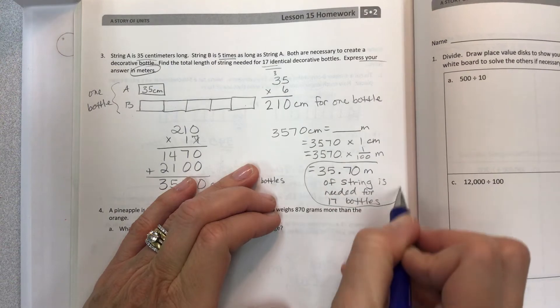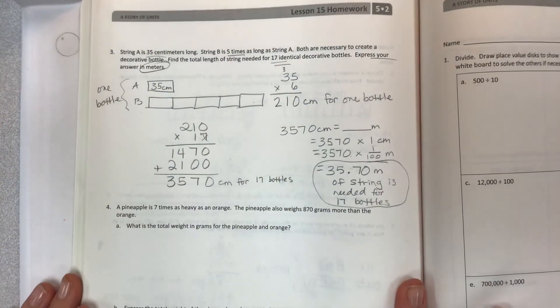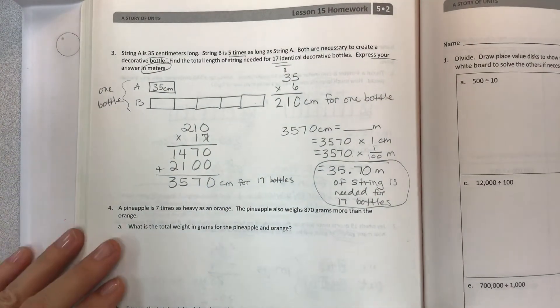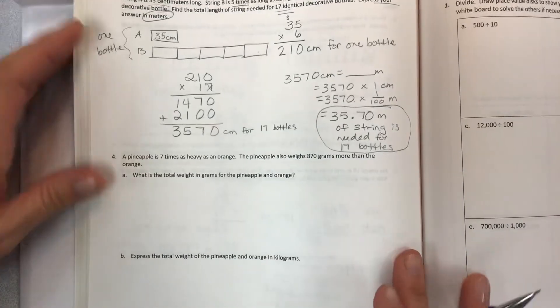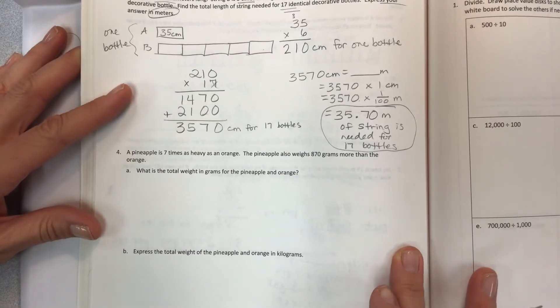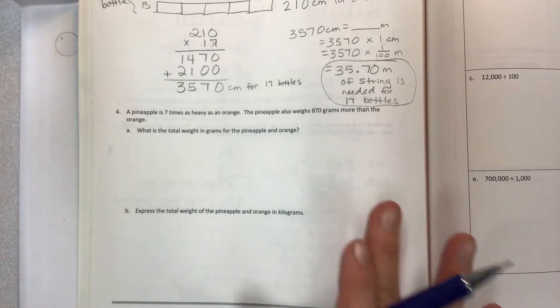And the decimal being previously here would have a new location there and a new label. So 35 and 70 hundredths meters of string is needed for 17 bottles. Woohoo. Getting the answers on these hard questions. Definitely difficult. I hope this is helpful.